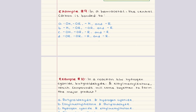Problem nine says in a hemiacetal, the central carbon is bonded to blank. In a hemiacetal, we have a hydroxyl group, an alkoxy group, a hydrogen (originally part of the aldehyde), and another alkyl or R group (the remaining part of the original aldehyde). This list matches answer choice A, so nine is A.